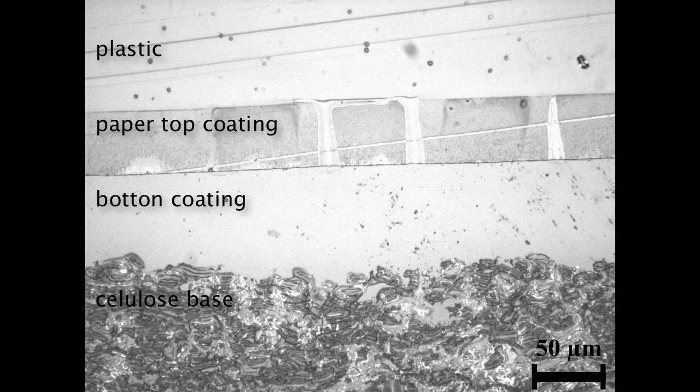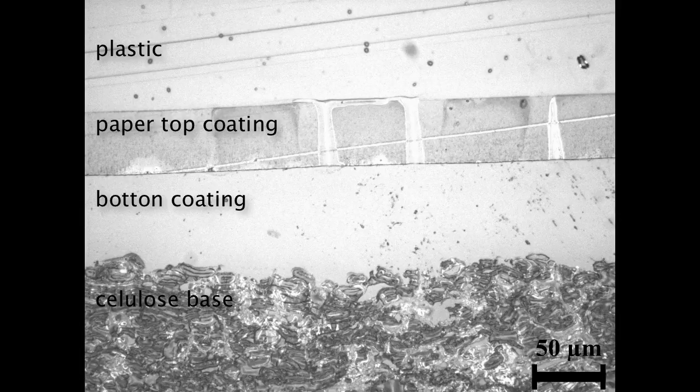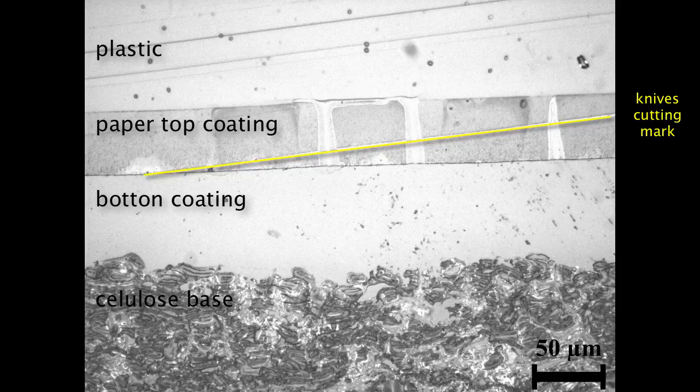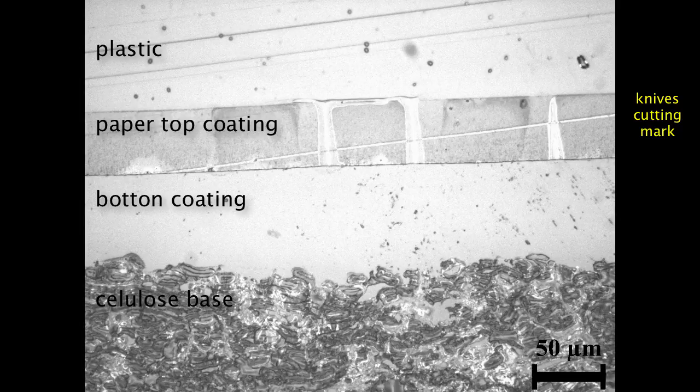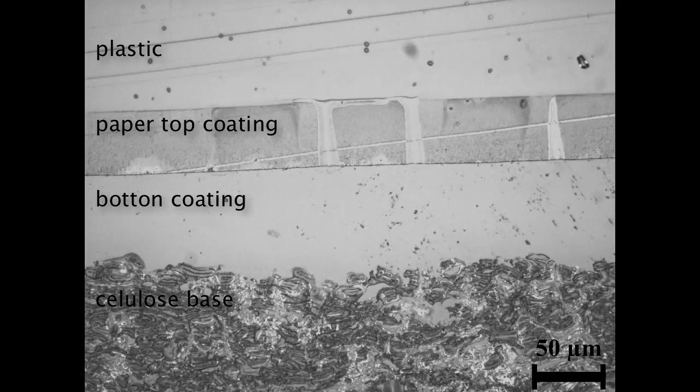Here you can see a light microscopy image of a somewhat thicker sample than the one that we use for the TEM. You can see the cross section of the paper here. And that's it. Now I showed you the ultramicrotome and how it operates. Hope it helped you. Bye.